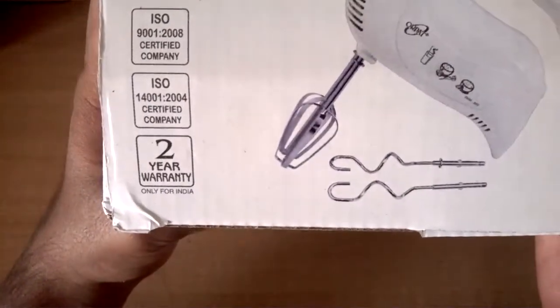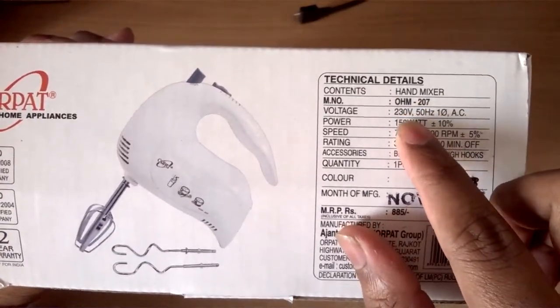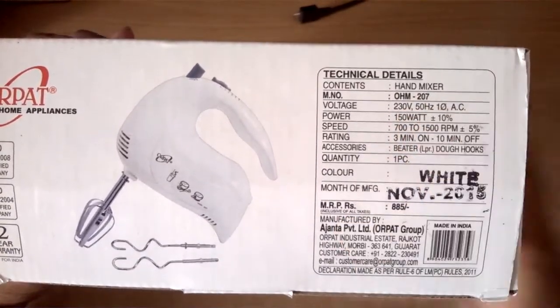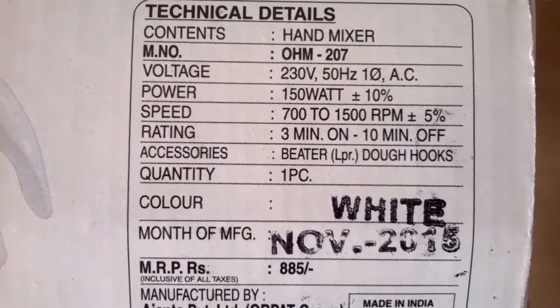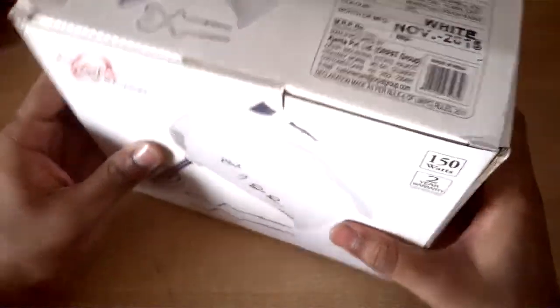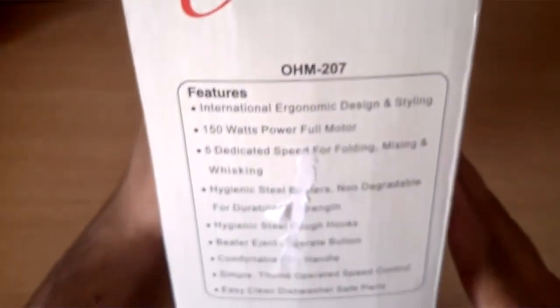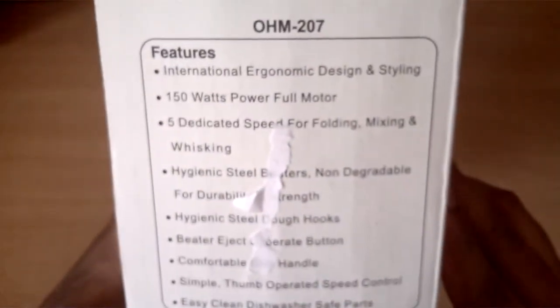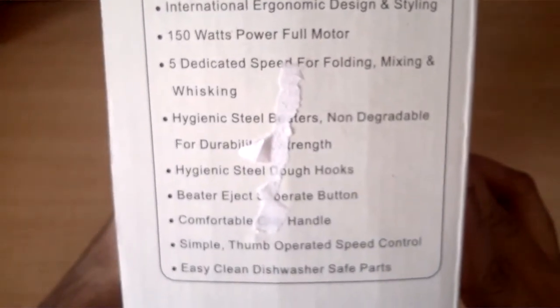At the top it says some certifications, technical details. It's a hand mixer model, voltage is 230 volt 50 hertz. You can pause the video and have a look if you want. The MRP is 885 rupees, it's from Ajanta, that's a brand from Gujarat. Better to buy from any brand that makes in India. Here are the features, you can pause it again and have a look.